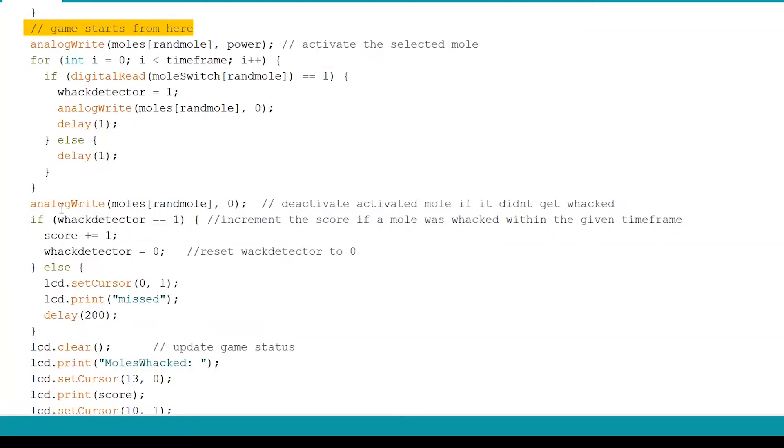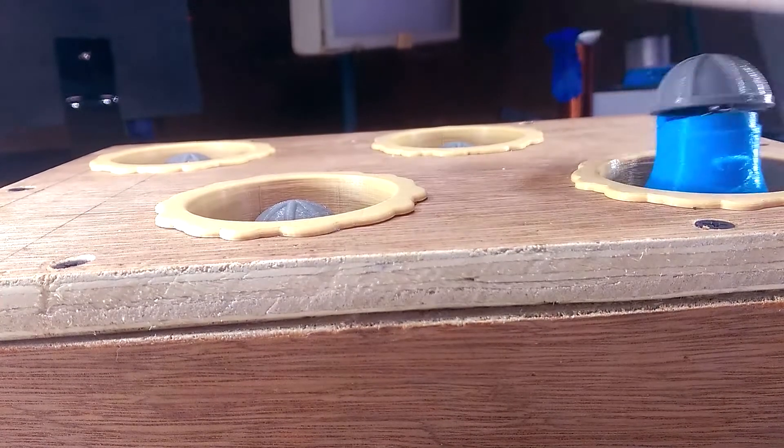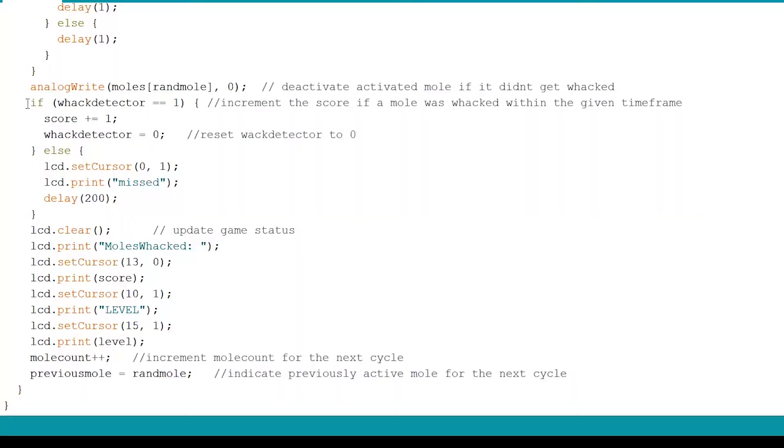This is where the game actually starts. First, it sends out a PWM signal to turn on the solenoid matched to the generated random number, and then enters this for loop that runs for an amount of time predetermined by the level, essentially allowing you a limited time frame to whack the mole. During this time, the code continuously checks if the limit switch matched to the active mole gets pressed. If it does, the whack detection variable gets set, and the mole is immediately deactivated. Deactivating the mole after detection helps to achieve this, instead of this. The next section of the code checks if the whack detection variable was set during the time frame, and then increments the score. After that, the code updates the information on the LCD, and the cycle starts again.